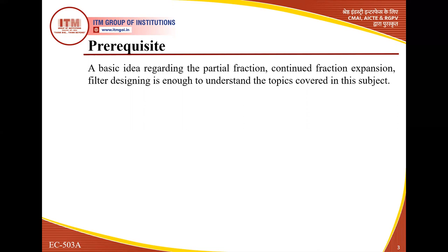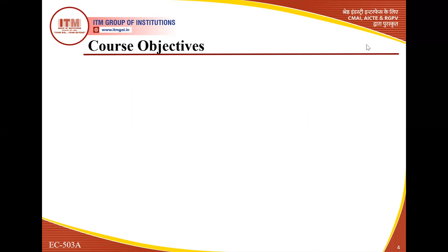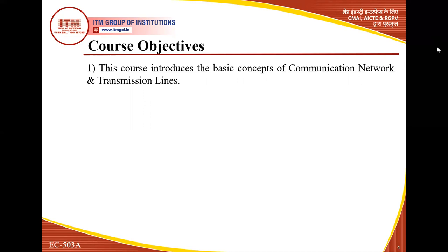Next we move to the course objectives. This course introduces the basic concept of transmission lines and communication networks. Here we discuss symmetrical and asymmetrical networks, and different types of transmission lines used, like coaxial cable, optical fiber, and twisted pair. After completion of the course, we have a developed concept of communication network and transmission line.